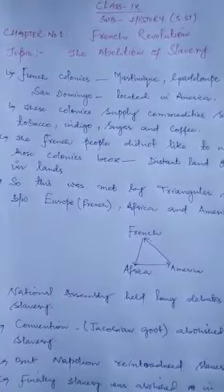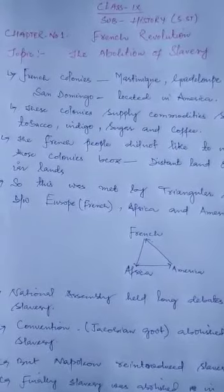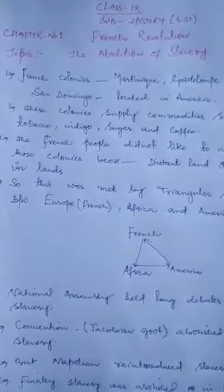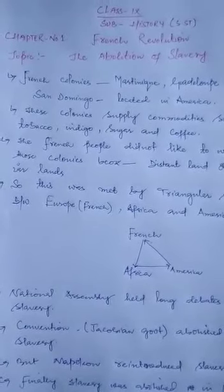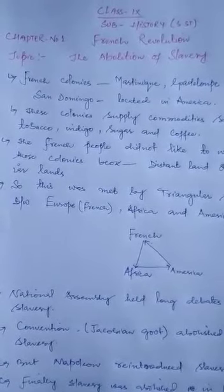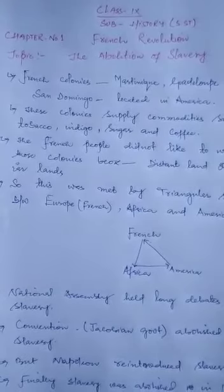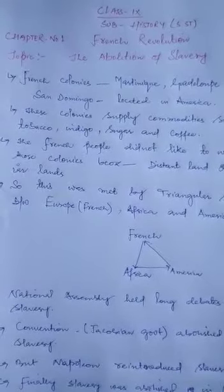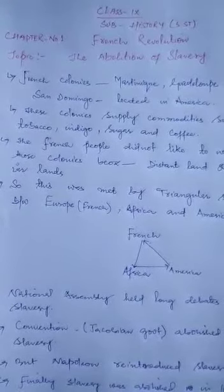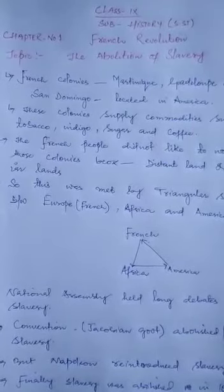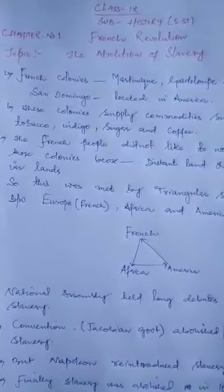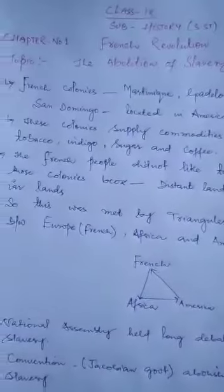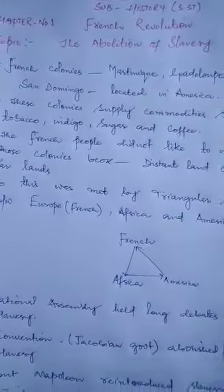So far as the definition of slavery is concerned, slavery simply means bringing negros or dark black people from Africa and forcing them to work in America on low wages or without wages. So this is the definition of slavery.